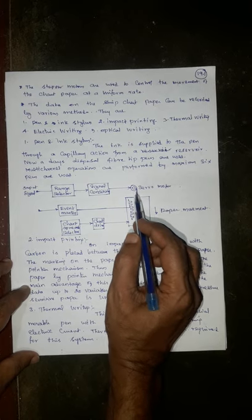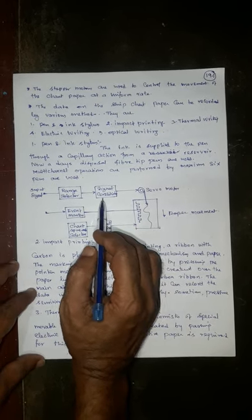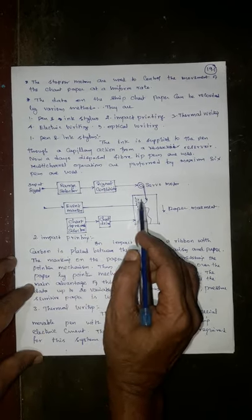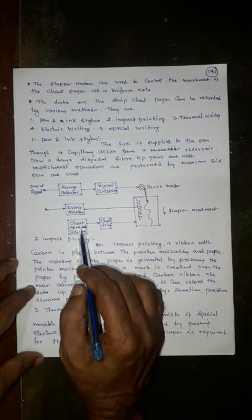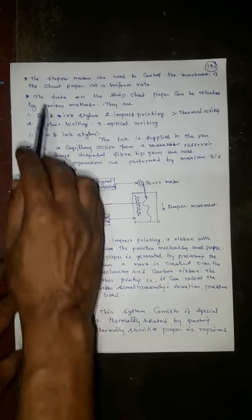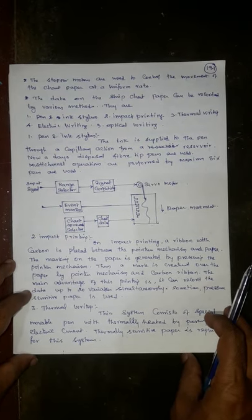This is a servo motor that is having a stylus or pen, signal conditioning circuit or signal conditioning range selector, signal input, this is an event marker, this is a chart driving chart speed selector. Here the stepper motors are used to control the movement of the chart paper at a uniform rate.